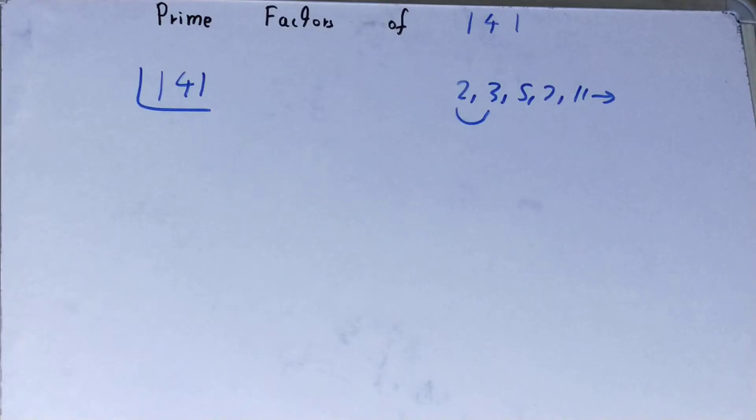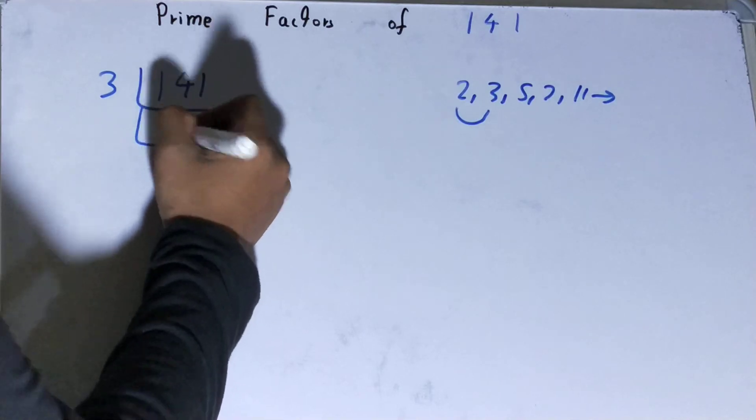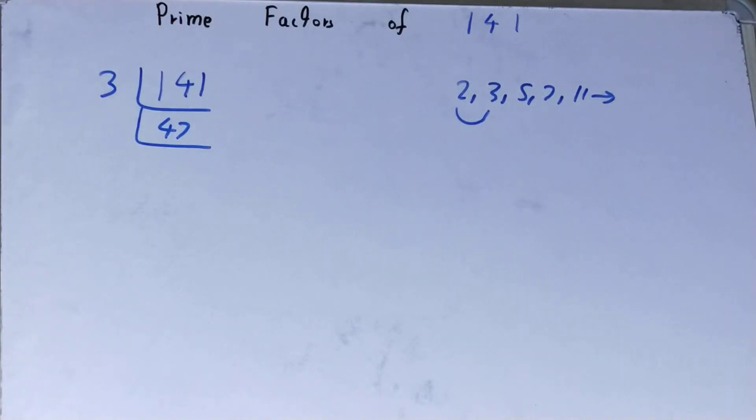Is 141 divisible by 3? If you see it nicely, yes it is divisible. 3 into 47 times. Now, is 47 divisible by 3? Clearly not, and not with any other prime number because 47 is prime itself.